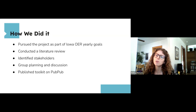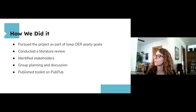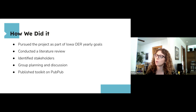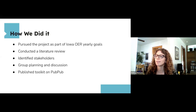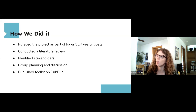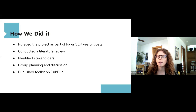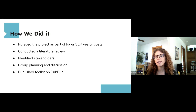At the same time as conducting the literature review, we identified stakeholders on our home campuses with applicability at other campuses as well, and how they might help with specific talking points. We conducted several working meetings where we gathered our research, planned the structure of the document, and wrote the main document together. We shared the manuscript with our whole Iowa OER Action Team, received feedback, and then Abby turned our Google Doc into the version on PubPub, complete with graphics, typesetting, and supplemental handouts.